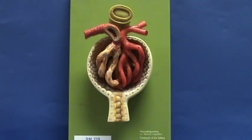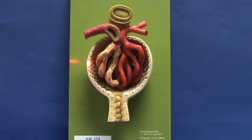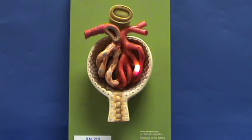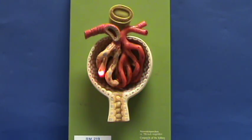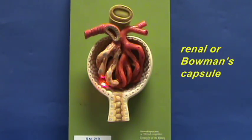Here is a model of the renal corpuscle, which illustrates the capsule. The capsule is surrounding a tuft of capillaries, and the capsule has an outer and an inner wall. This capsule is what is referred to as the renal capsule, or it's also known as Bowman's capsule.